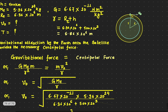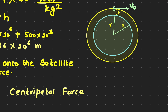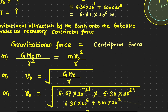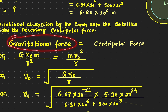As the satellite is moving in a circular orbit, there must be a force that provides the necessary centripetal force — because whenever an object moves in a circular or elliptical orbit, there must be a centripetal force. In this case, the gravitational force provides the necessary centripetal force. So all we have to write down is: gravitational force equals centripetal force.